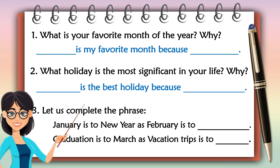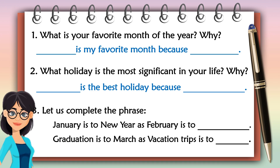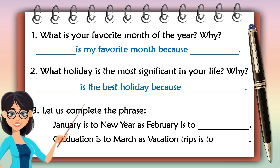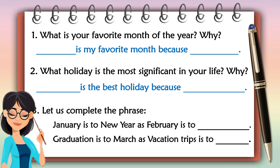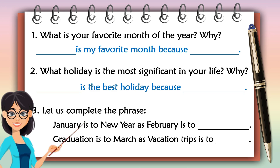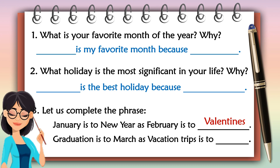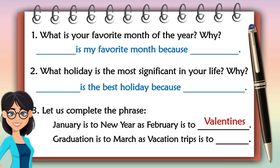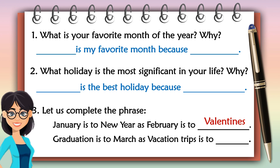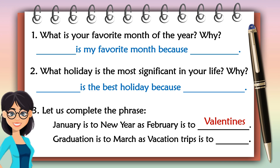Let us complete the phrase. January is to New Year as February is to... Your answer? Alright — Valentine's Day! Graduation is to March as vacation trips is to... And your answer? Correct — April!